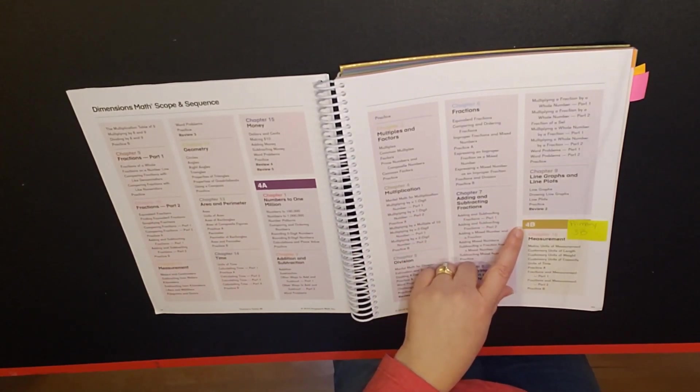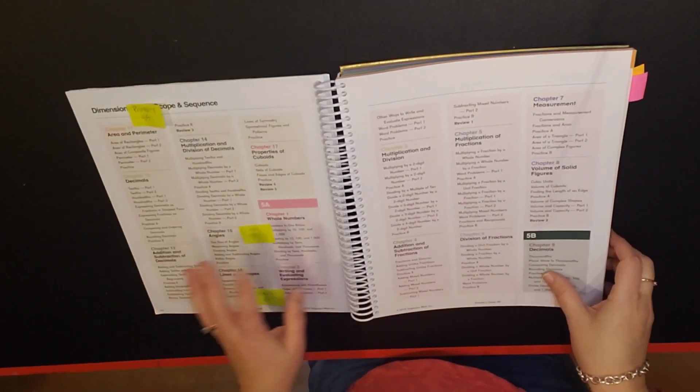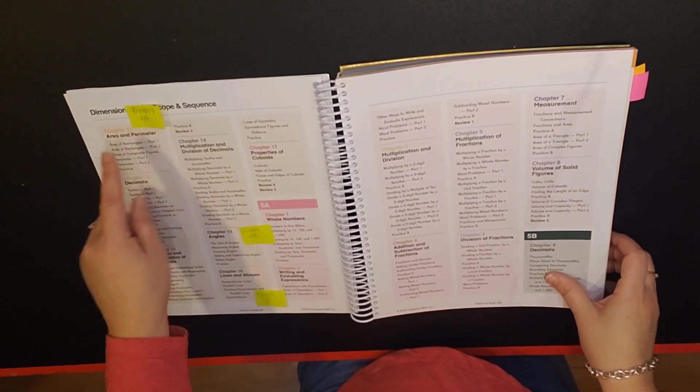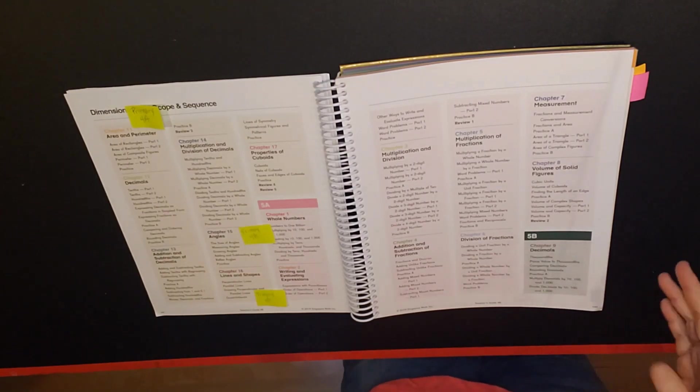Let's talk a little bit about the differences in the scope and sequence. For example, measurement is the first concept that is discussed in 4B. This was discussed in primary mathematics 3B. Area and perimeter was in primary 4A. Now decimals is discussed in both primary and dimensions. Angles, lines and shapes were both in 4A. So there is a little bit of difference within the scope and sequence so again just make sure that you take the placement test and also it may not be wise to switch in the middle of the year but that is entirely up to you.